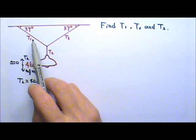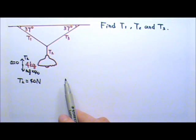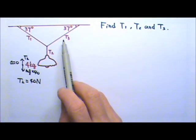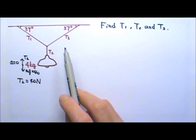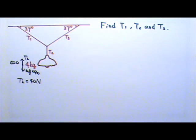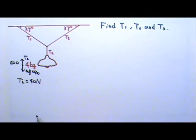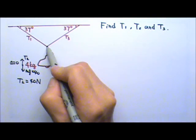But we still need to find T1 and T3. This means we need to draw a force diagram that includes T1 and T3. We need to draw a force diagram for something that T1 and T3 are touching. I have to draw a force diagram for the junction point.